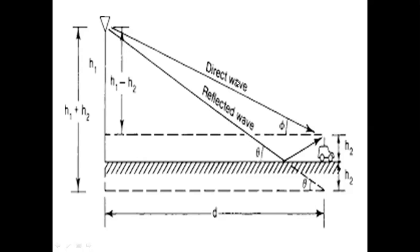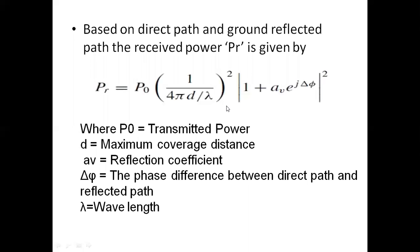Based on the direct wave and reflected wave, the received power at the mobile antenna is: Pr = P0 · (1/(4π · D/λ))² · |1 + Av · e^(j·Δφ)|². Here Pr is the received power, P0 is the transmitted power at the cell site, Av is the reflection coefficient, Δφ is the phase difference between the direct and reflected waves, and λ is the wavelength.